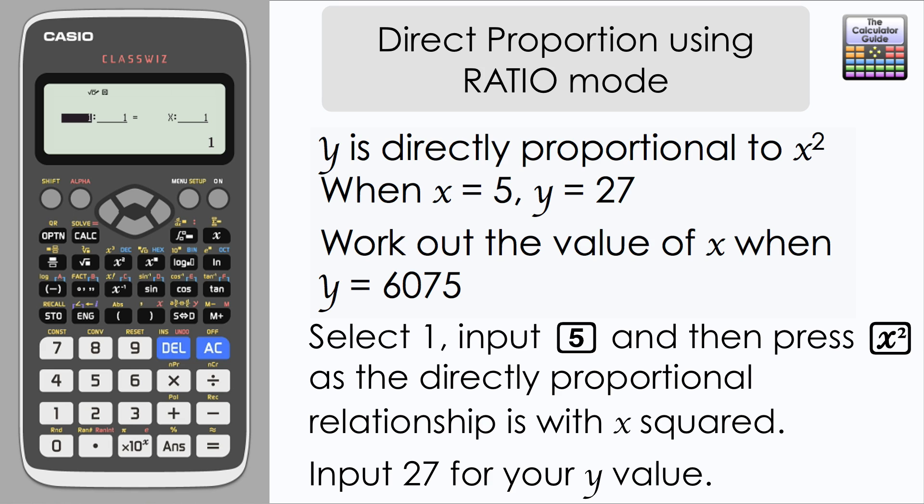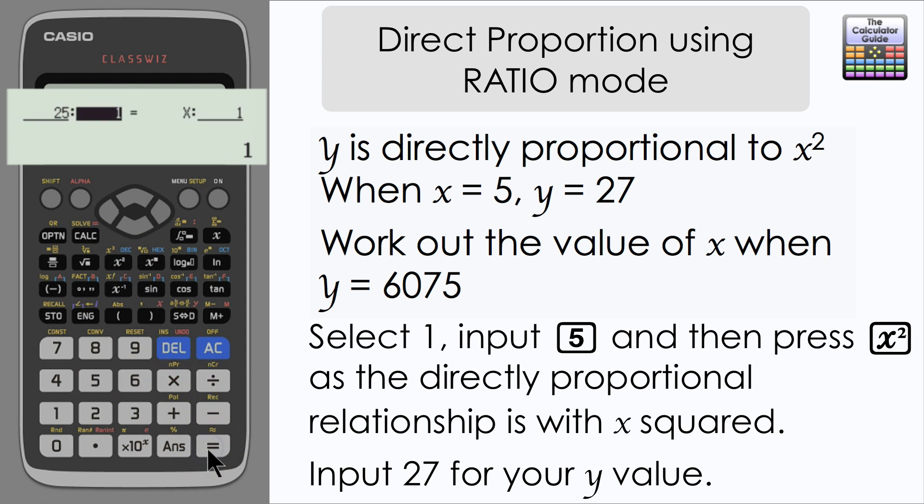I'm going to input my first value on the left hand side of the ratio here. x has a value of 5, but the relationship is y is directly proportional to x squared, so we could input this as 5 squared or 25. The calculator has changed that for us.